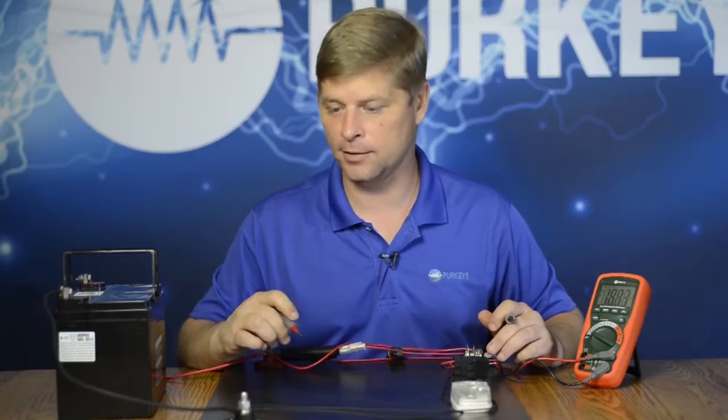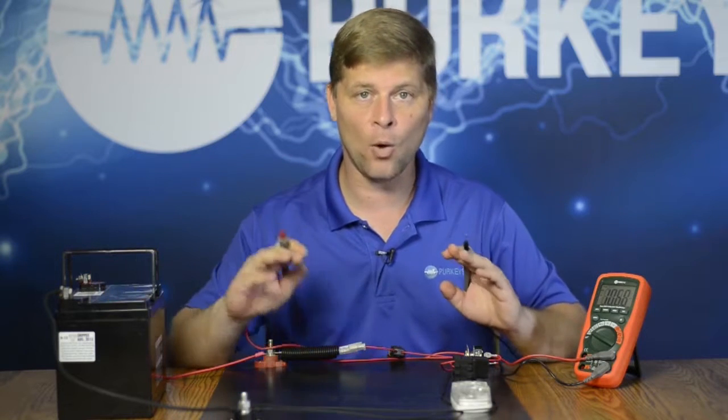All this voltmeter does is tell us we saw 12.2 on the positive and zero at the negative. That's the only thing a voltmeter does—tell us the difference between two different points.